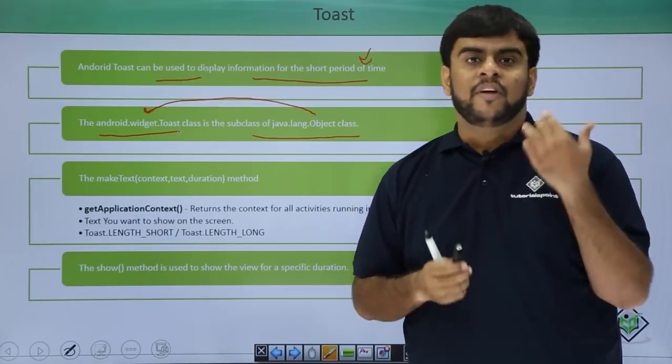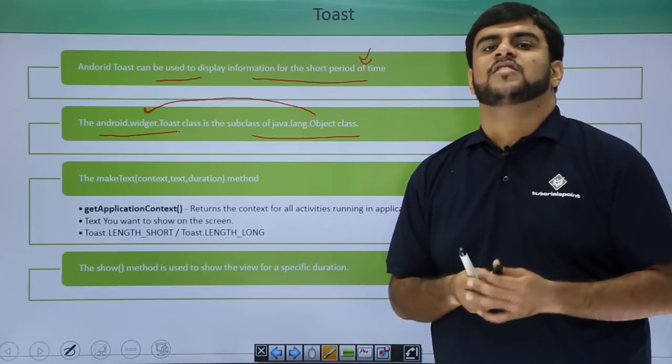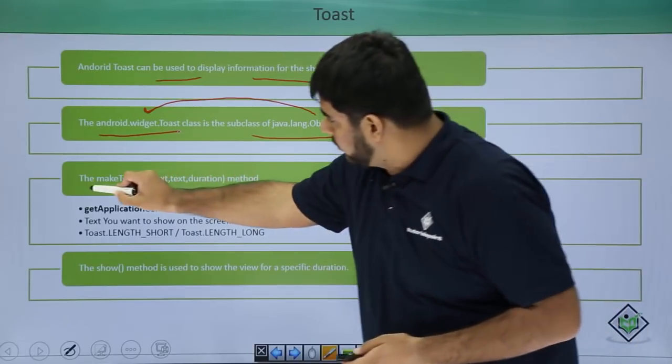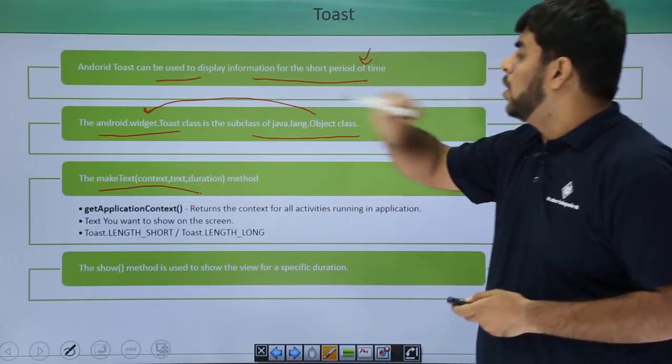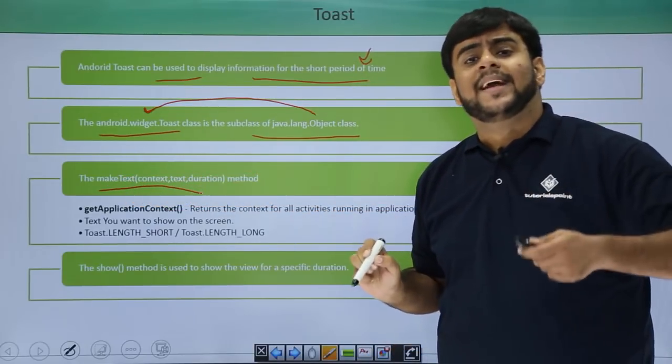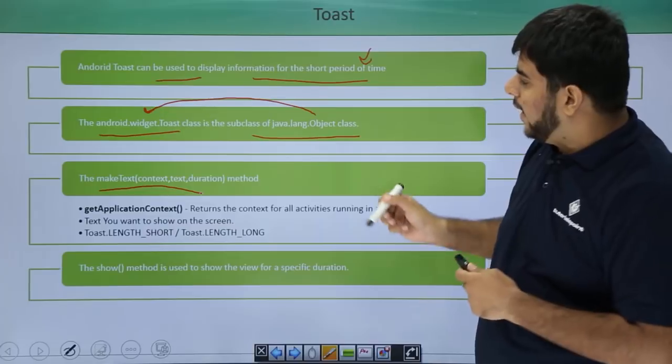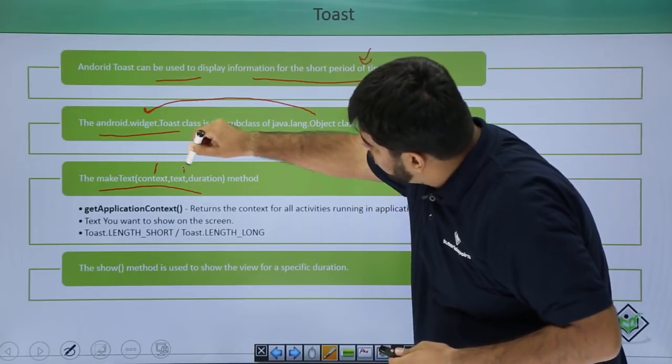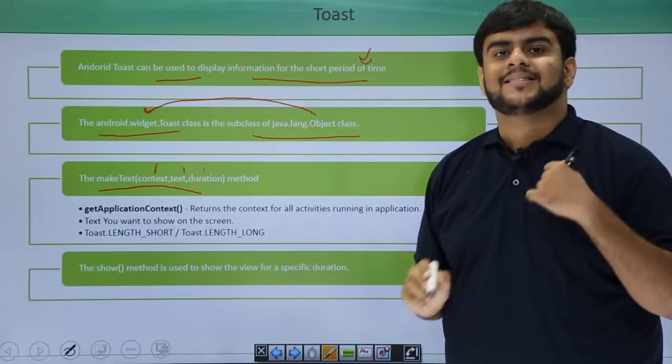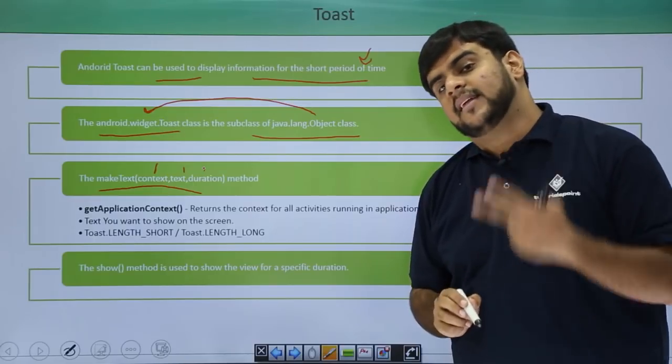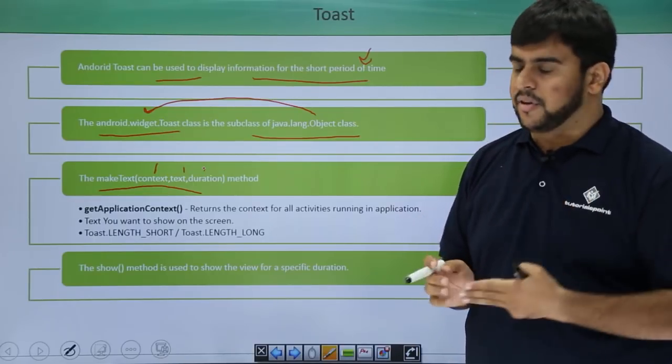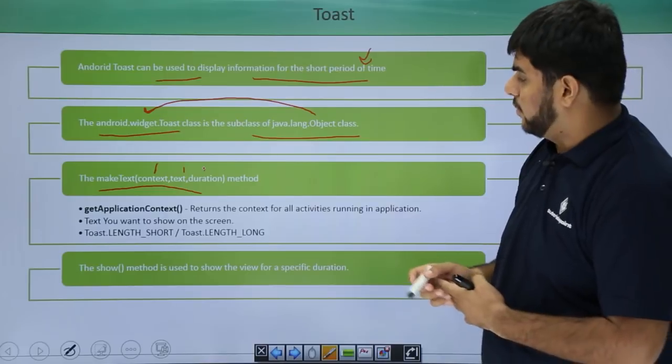How do we actually make a Toast? To make a Toast, we need to use the makeText method of a Toast. This makeText method will have three important parts. The first part is the context, the second part is the text and third part is the duration.